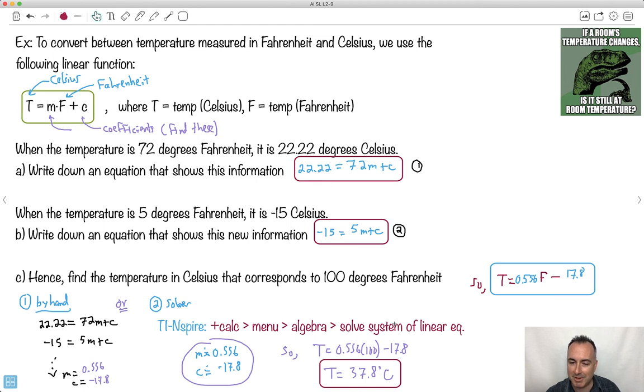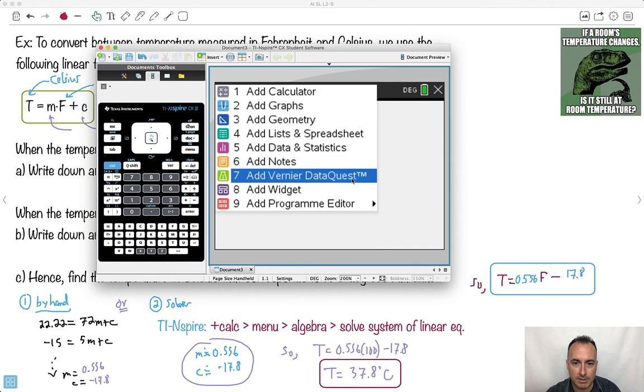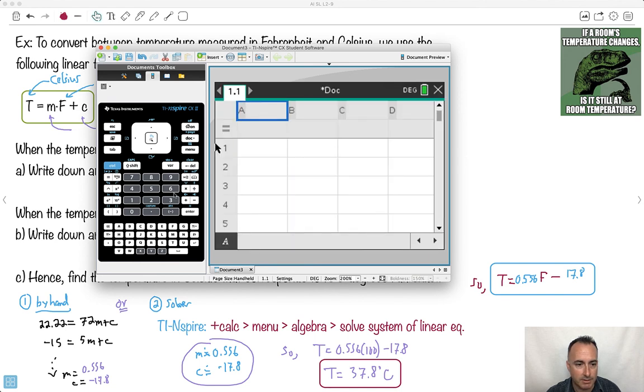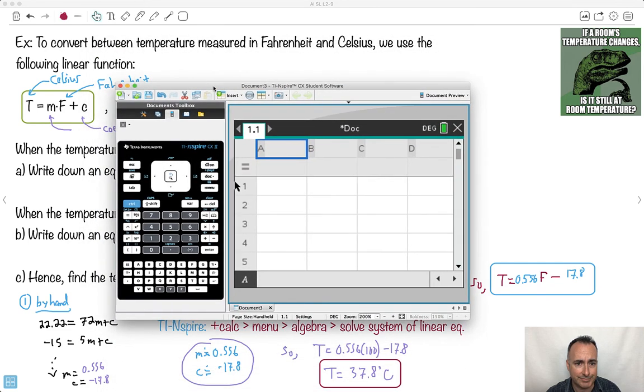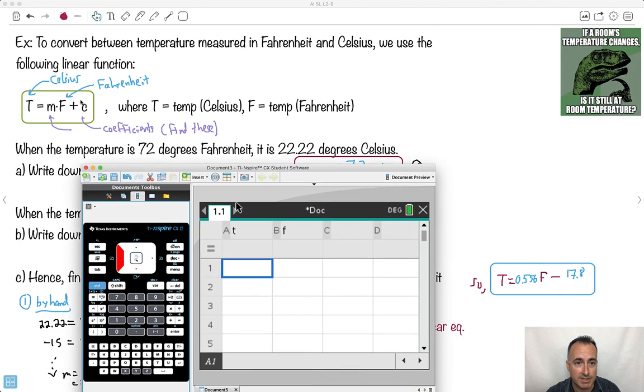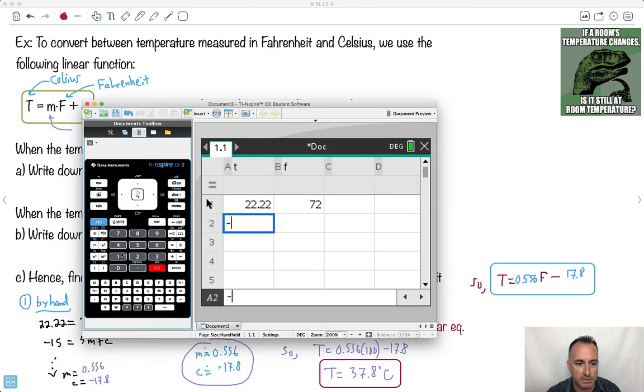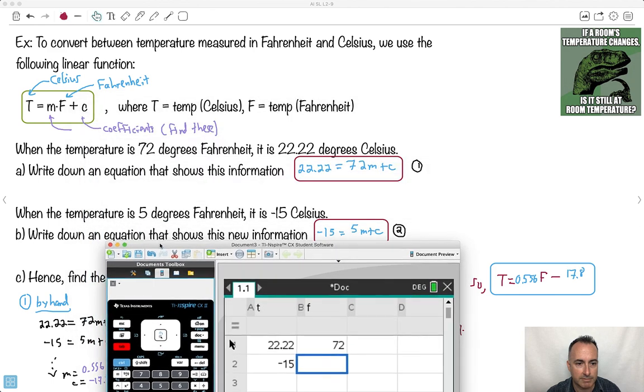Now there was another way you could have done it. If you want to do a regression on it, I just want to show you. You could have actually done it in a more interesting way. Let me show you here. I'll do a list and spreadsheet. I'll call it T and F just like I did here. I'll call this one T and this one here F. I just want to show you this right here as another way of doing it. So what if I put in my data points that I knew? I know that when it's 22.22, I know that the temperature in Fahrenheit is 72. And when my T value in Celsius is -15, it's 5 Fahrenheit.